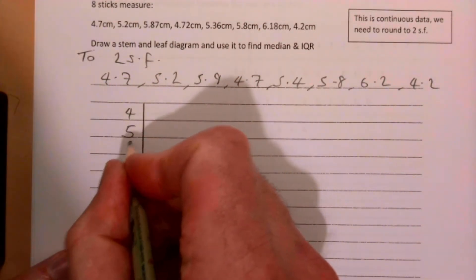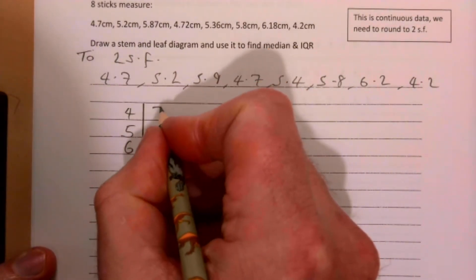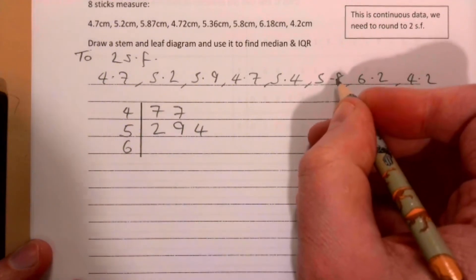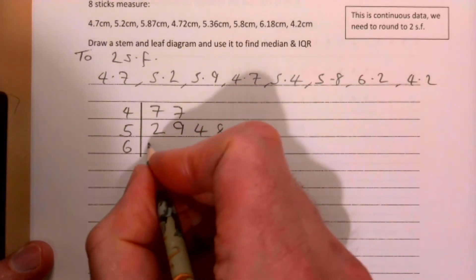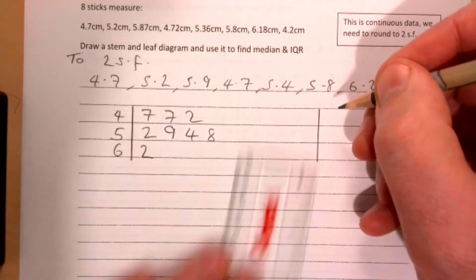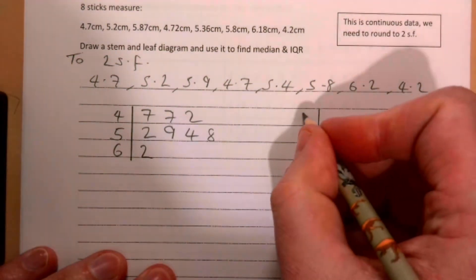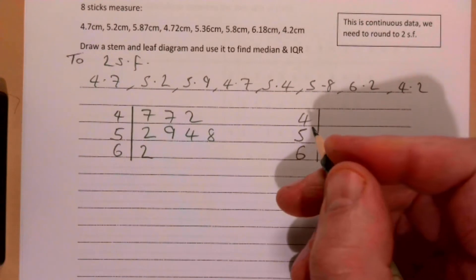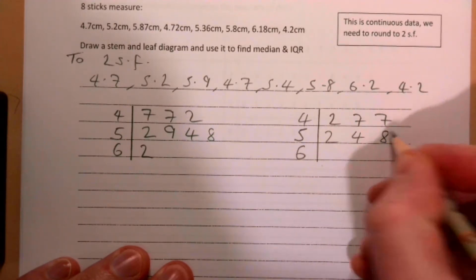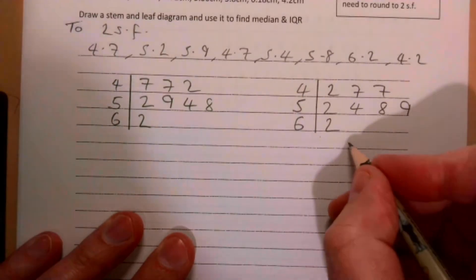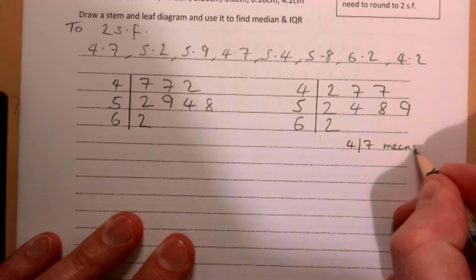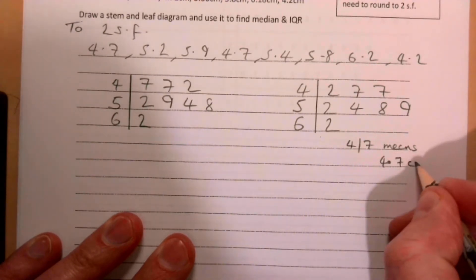We have stems 4, 5, 6. So 4.7, 5.2, 5.9, 4.7, 5.4, 5.8, 6.2, and 4.2 gives us: 4 has leaves 2, 7, 7; 5 has leaves 2, 4, 8, 9; and 6 has leaf 2. Remember our key, so 4|7 means 4.7 centimeters.